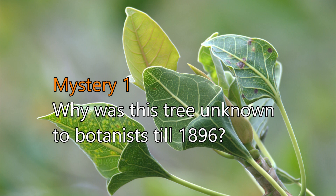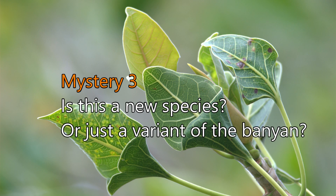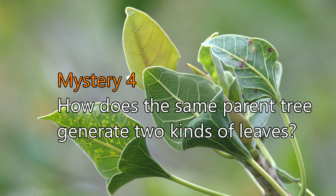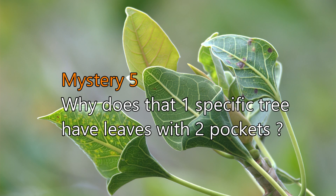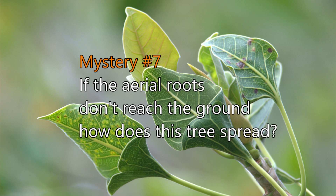Here's a quick recap from part one. We saw six mysteries at this mysterious fig tree: Why was this tree unknown to botanists till 1896? Who is the Bengali gentleman? Is this a new species or just a variant of the banyan? How does the same parent tree generate two kinds of leaves? Why does that one specific tree have leaves with two pockets? Why don't the aerial roots reach the ground, and how does this tree spread?